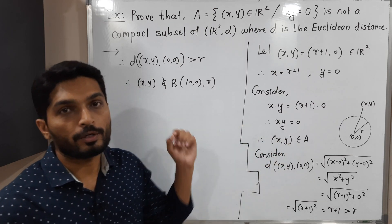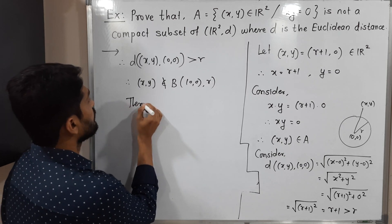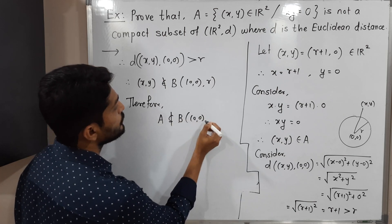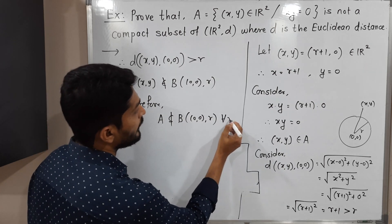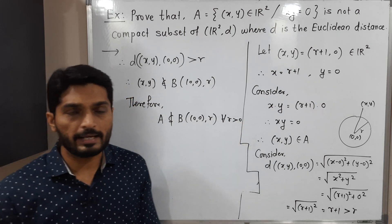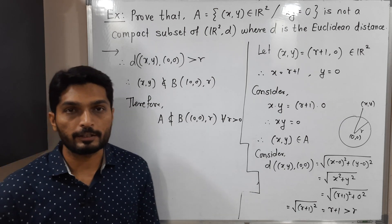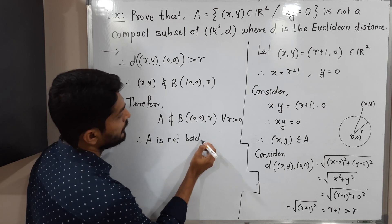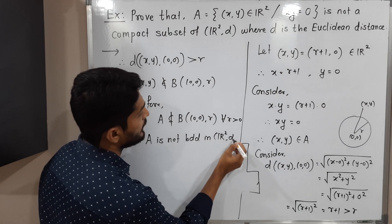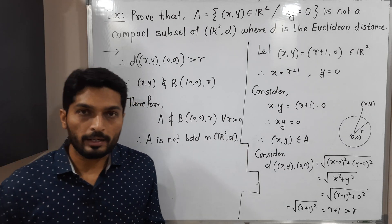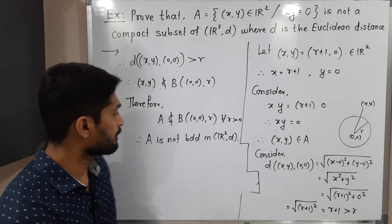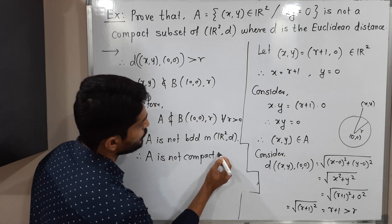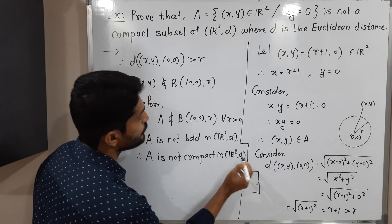We found one point which is in A but not in the ball. Therefore A is not a subset of the ball with center (0,0) and radius R. Since R was arbitrary, this is true for every R > 0. Therefore A is not bounded in metric space R²D where D is a Euclidean distance. Hence A is not compact in R²D, because it is not bounded.